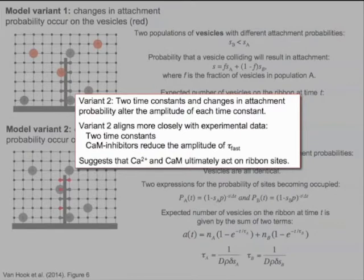To summarize, if calcium and calmodulin ultimately influence the ribbon to regulate attachment probability, this predicts the existence of two time constants, and that changes in attachment probability change the amplitude carried by each time constant. This aligns more closely with the data, suggesting that calmodulin ultimately acts on attachment sites on the ribbon.